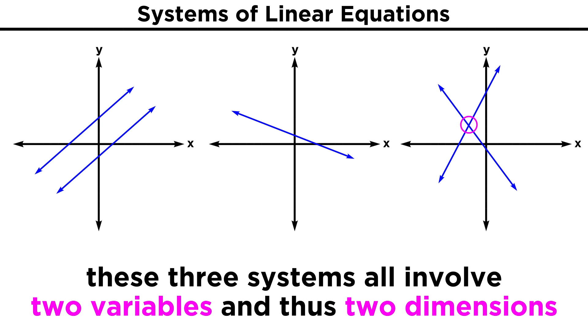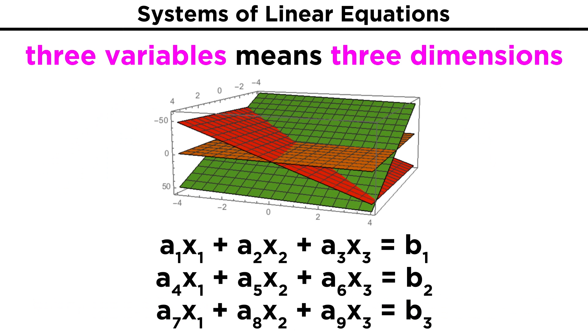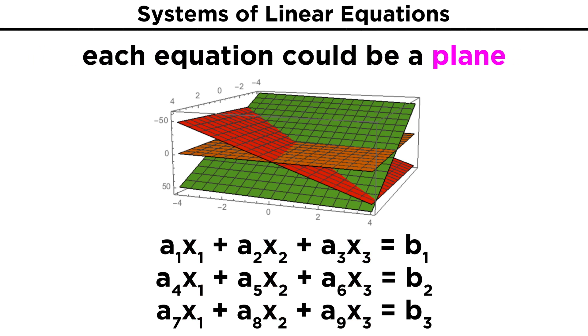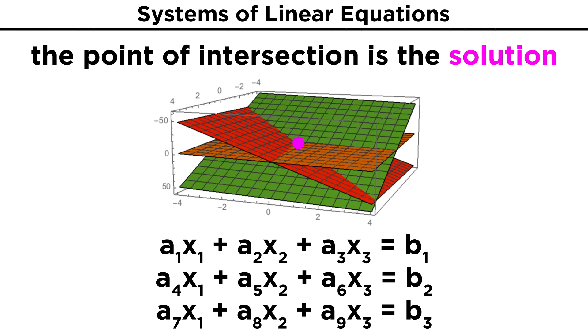But we don't have to stop with two dimensions, corresponding to two variables. We will frequently see three variables, and if we have equations, each with an x₁ term, x₂ term, and x₃ term, which can correspond to x, y, and z, these could each correspond with a plane, such as with this system of three equations. We can draw the three planes and see where they intersect, in this case at a singular point, and the coordinates of this point represent the solution to the system.